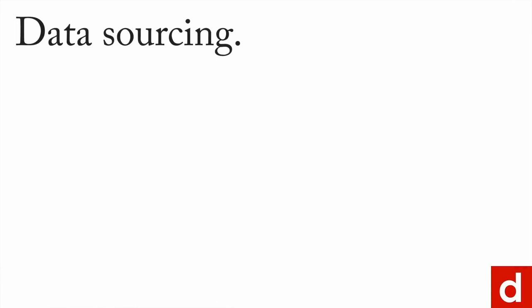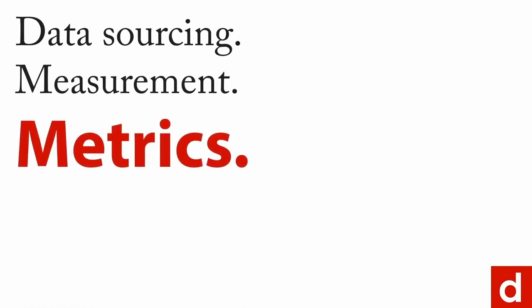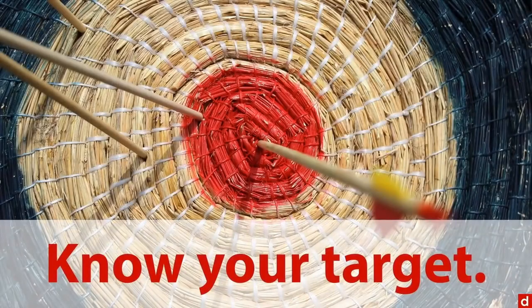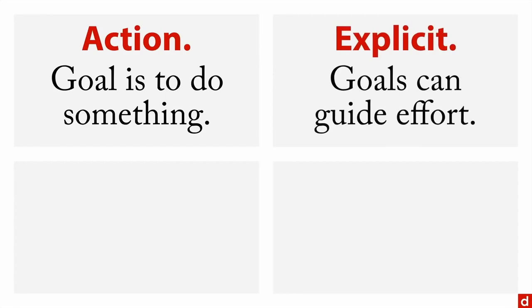For data sourcing, the first thing we want to talk about is measurement. Within that category, we're going to talk about metrics. The idea is that you actually need to know what your target is if you want to have a chance to hit it. Data science is action oriented — the goal is to do something as opposed to simply understand something. Your goal needs to be explicit, and that's important because goals can guide your effort, so you know exactly what you're trying to accomplish and when you get there.